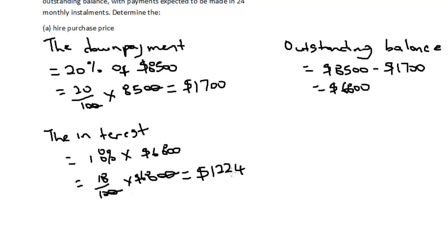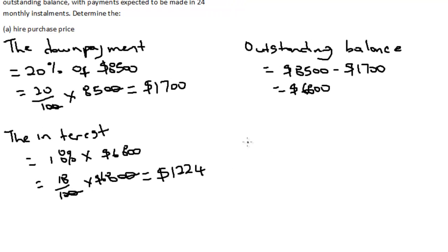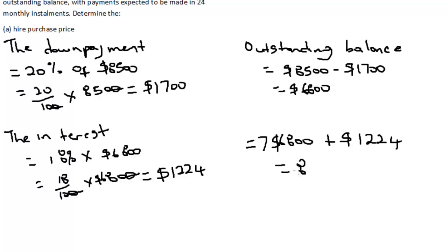Now we know the outstanding balance and the interest charged. To find the total amount the consumer must repay over the 24-month period, we add the outstanding balance plus the interest charged: $6,800 plus $1,224, which equals $8,024.